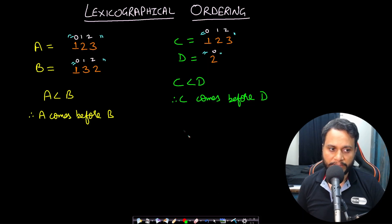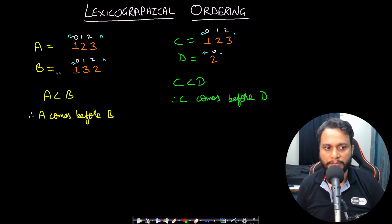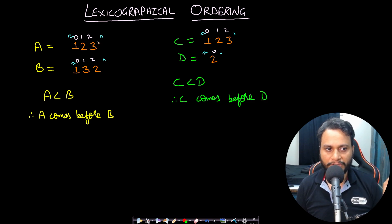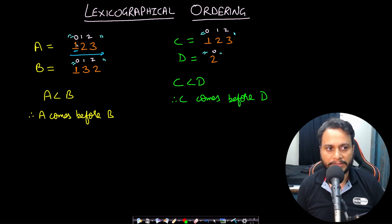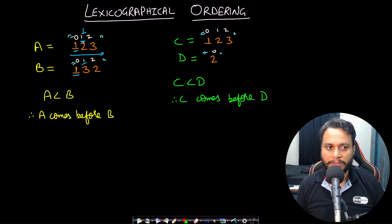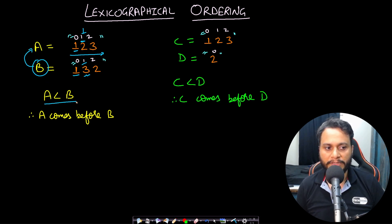Let's clarify lexicographical ordering. Say a equals 123 and b equals 132. Lexicographical ordering is always calculated from left to right. The 0th position of both is the same, so we compare position 1. Since they differ, whichever digit is larger makes that string larger. Here a is less than b, so a must come before b.